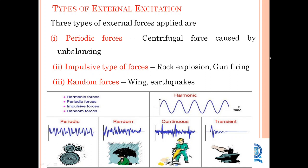The third type of external forces includes wind and earthquakes. These three types are harmonic forces, which may be periodic forces, impulsive forces, and random forces. Periodic forces occur at regular intervals; random forces, for example rain, occur at random. Drilling produces a continuous value and hammering produces a transient value.